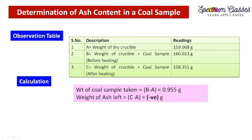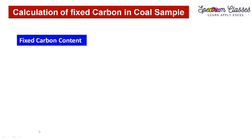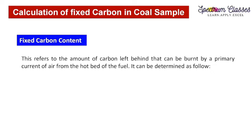You should be very careful about this type of experiment. For percentage ash content: weight of ash left divided by weight of coal sample, multiplied by 100. This gives the percentage of ash content.